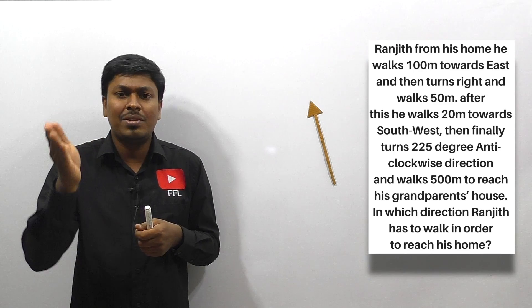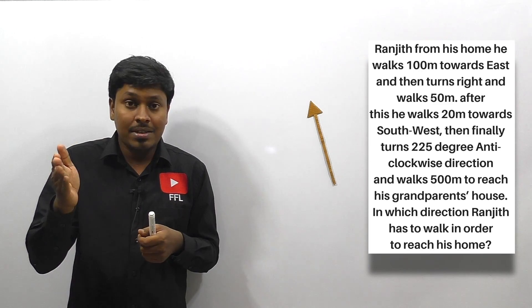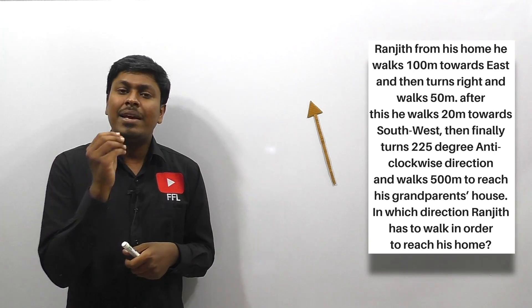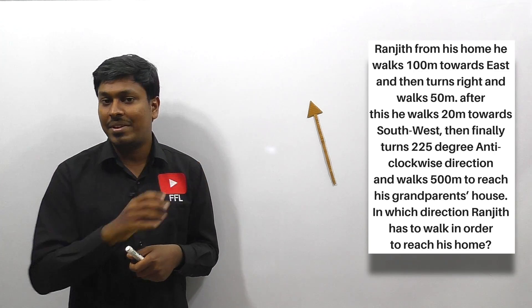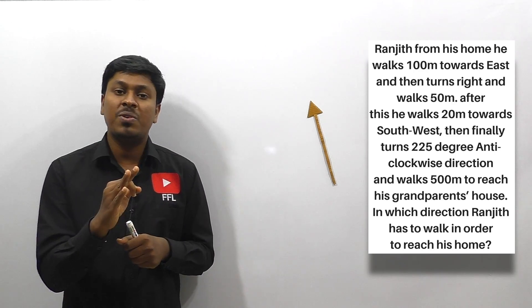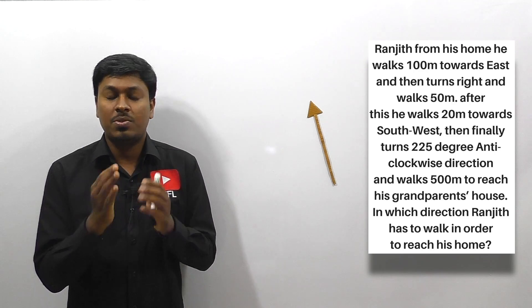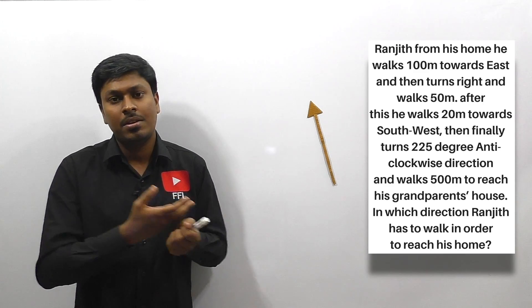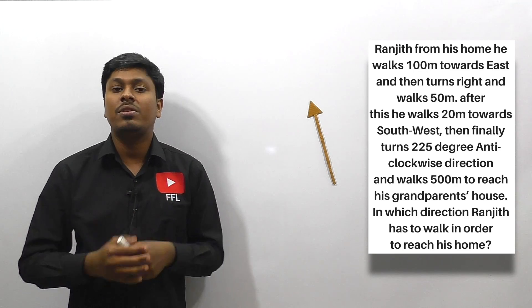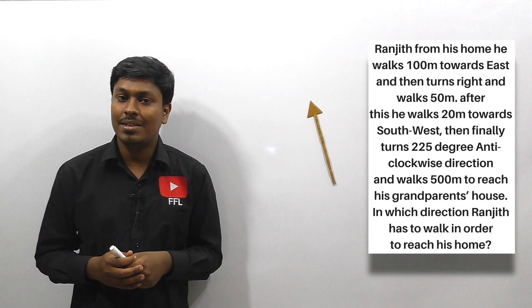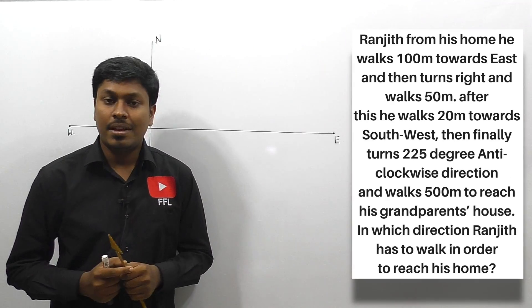First you need to walk some distance and then turn southeast or northeast direction, after that turn anti-clockwise or clockwise — it's a little confusing, but just apply a small logic to crack it. Listen to all three questions and take a note so that it will surely help you if this question occurs in IBPS PO 2017. Let me move on to the three interesting and confusing direction questions.